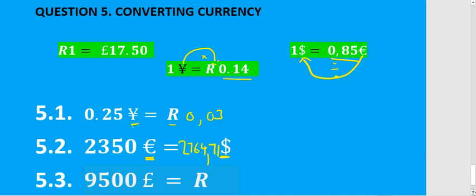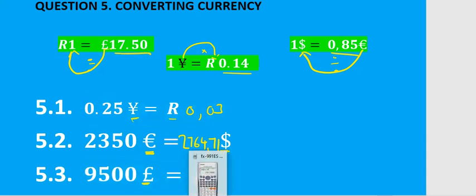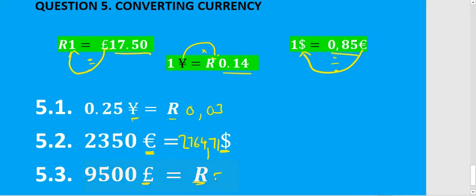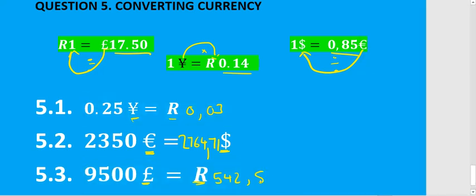For 5.3 we need to convert pounds to rand. Going backwards in the conversion, so we divide by 17,50. Take 9,500 and divide by 17,50. That gives us 542, and rounded to two decimal places that is 542,86. That's the end of the lesson.